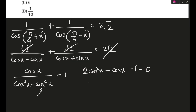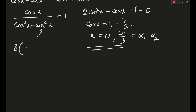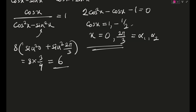This is the very simple quadratic 2x² − x − 1 = 0, with solutions cos x = 1 and cos x = −1/2. So x = 0 is one solution and x = 2π/3 is the other, given the domain restriction. These are α₁ and α₂, and we find 8(sin²α₁ + sin²α₂) = 8(sin²0 + sin²(2π/3)) = 8 × 3/4 = 6.